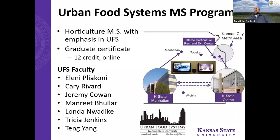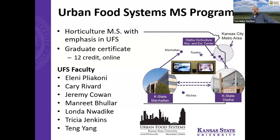We have both a master's degree and a graduate certificate. That master's degree is a pretty typical 30 to 36 credits, depending on whether it's a thesis option, a report option, or professional track. The graduate certificate is a 12-credit certificate with six required courses and the rest elective.